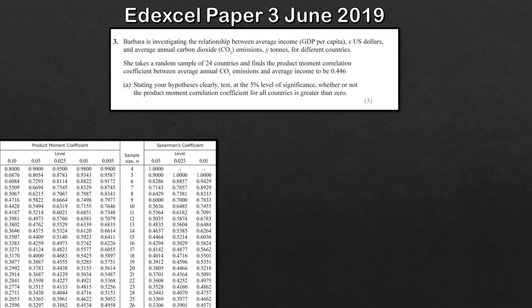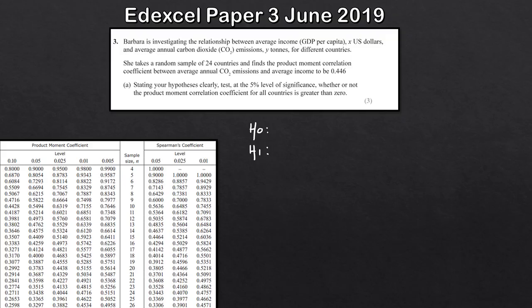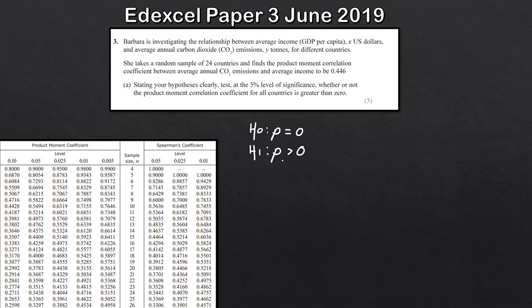Now let's look at the last question. It's pretty similar — usually only the context changes. For question three, we start by defining the hypotheses. We're testing at the five percent level of significance whether or not the PMCC for all countries is greater than zero. So rho equals zero for H0, and for H1 this is a one-tailed test — rho is greater than zero.